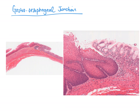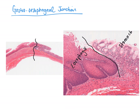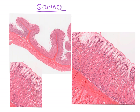This slide shows the gastroesophageal junction — the junction between the esophagus and the stomach. On one side is the esophagus, identifiable by its stratified squamous epithelium; on the other side is the stomach. This junction is really distinctive and sudden — there is no gradual transition. When you hit the stomach, it doesn't have stratified squamous epithelium; it has simple columnar epithelium.